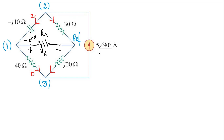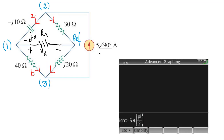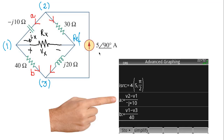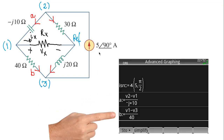I give names to those currents that appear in more than one KCL equation: current A on the top and current B on the bottom. The current in the source is 5∠(π/2) = 5∠90°. Current A on the top is (V2 − V1)/(−j10); current B on the bottom is (V1 − V3)/40.